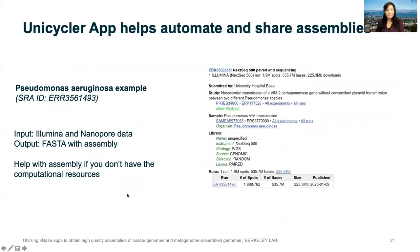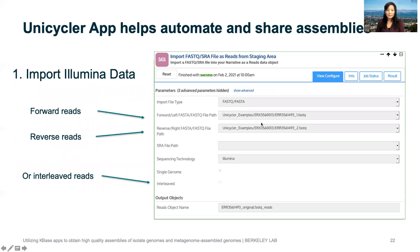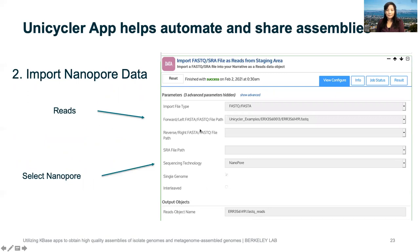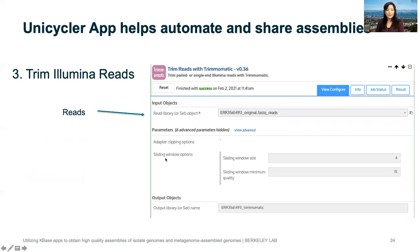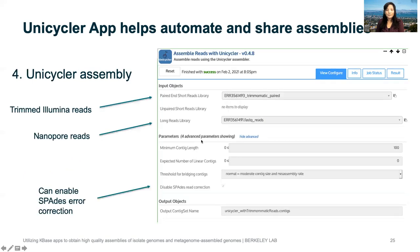I asked KBase if they could implement Unicycler for me and they did. Here's a quick example using public data. The input for Unicycler is Illumina and Nanopore data — you could also use PacBio data. The output is a FASTA file with the assembly. The Illumina data can be two files for forward and reverse reads or an interleaved file. Importing the Nanopore data is the same: you get the FASTA file and select Nanopore as the option. You want to trim your Illumina reads, as read quality will affect your assembly.